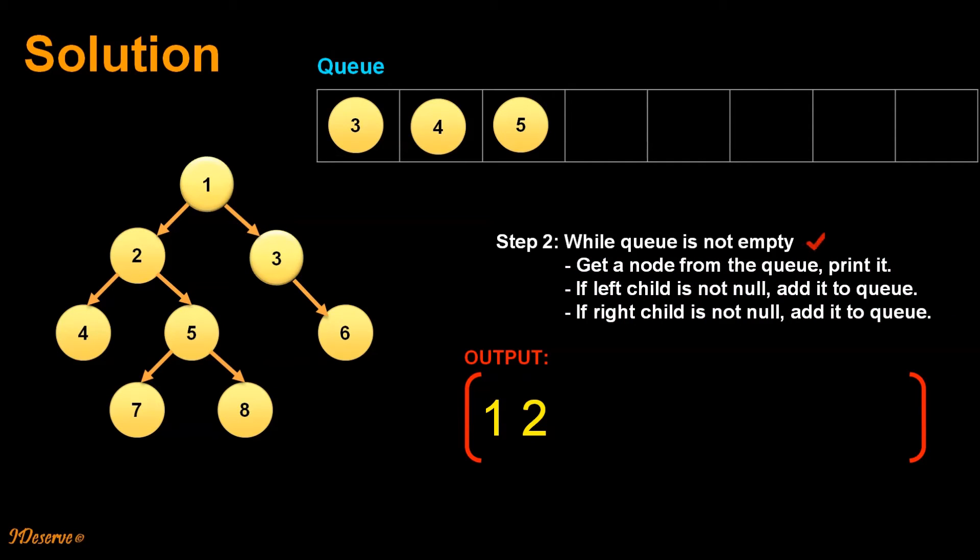Then we move on to next step where we check whether queue is not empty. It is not empty. So that is why we deleted node 3 and we printed it and we added node 6 since it had only one child.